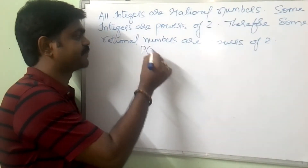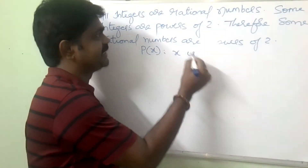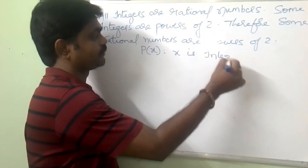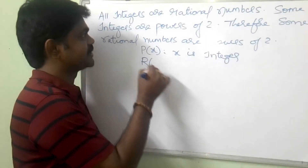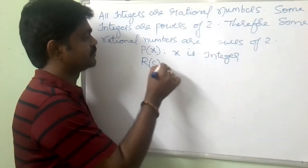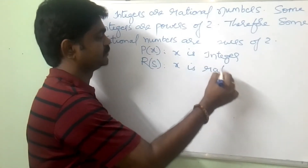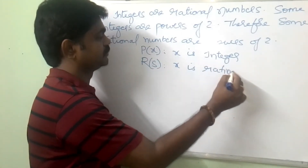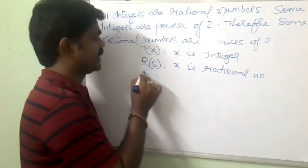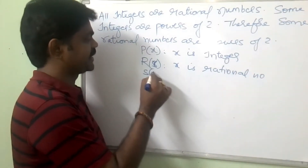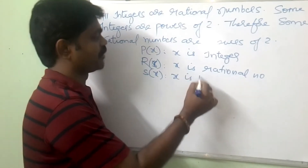Let me take P of X. So P of X is: X is an integer. R of X is: X is a rational number. S of X is: X is a power of 2.